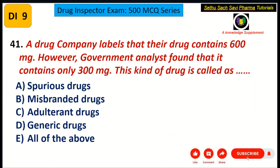Coming to the first question of the day: a drug company labels that their drug contains 600 mg. However, the government analyst found that it contains only 300 mg. This kind of drug is called as: A. Spurious drug, B. Misbranded drug, C. Adulterant drug, D. Generic drug, E. All of the above.